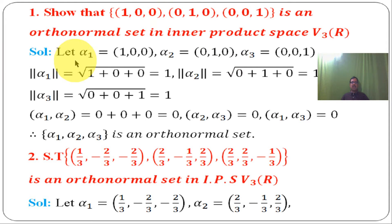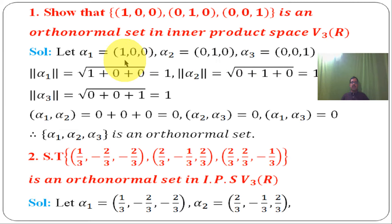Solution: let alpha 1 = (1, 0, 0), alpha 2 = (0, 1, 0), alpha 3 = (0, 0, 1). To show orthonormal, we need to verify the dot product of each pair of vectors is zero, and also verify that the norm of each vector equals 1.